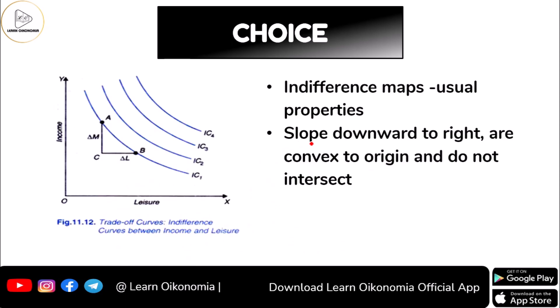We are considering a set of indifference curves — we call it an indifference map. The indifference map considered here follows all the properties of a usual indifference map, and each indifference curve follows the usual properties: it slopes downward to the right, it is convex to the origin, and it will not intersect — if it did intersect it would violate the assumption of transitivity.